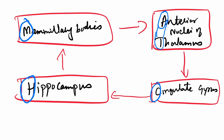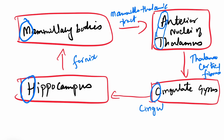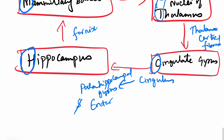You should also remember how the parts are connected. From the hippocampus: fornix to the mammillary body; from the mammillary body by the mammillothalamic tract to the anterior nuclei of the thalamus; from the thalamus by the thalamocortical fibers to the cingulate gyrus; and from the cingulate gyrus by a white matter bundle of nerve fibers known as the cingulum, which goes to the parahippocampal gyrus and entorhinal cortex.